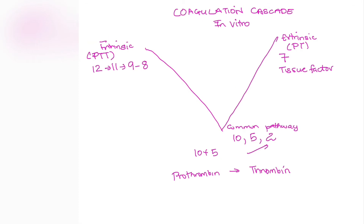Thrombin then activates factor 1, which is fibrinogen, and converts it to fibrin (1a). The fibrin then activates factor 13 to 13a, which forms cross-linkages, giving you your fibrin clot.